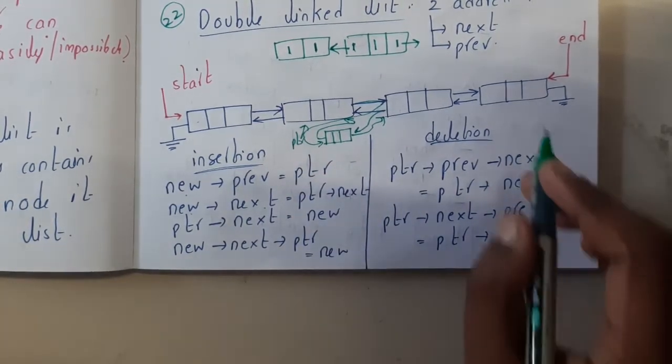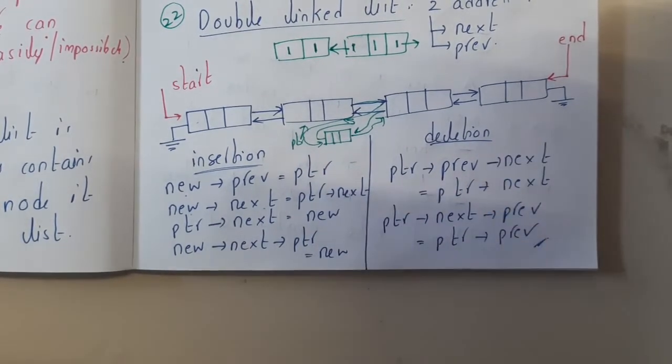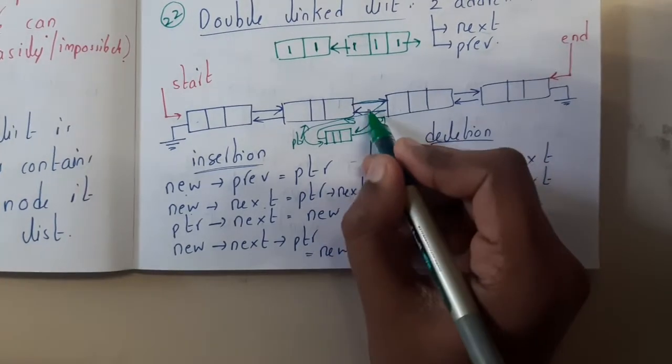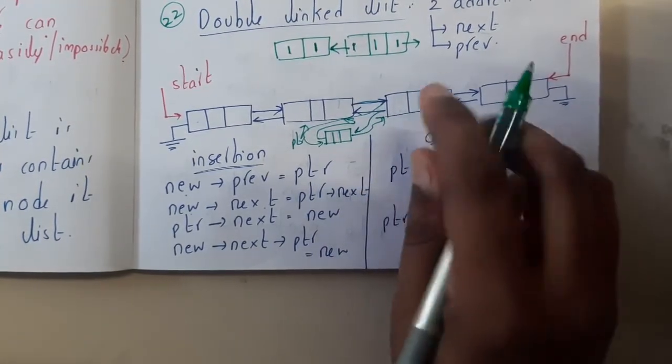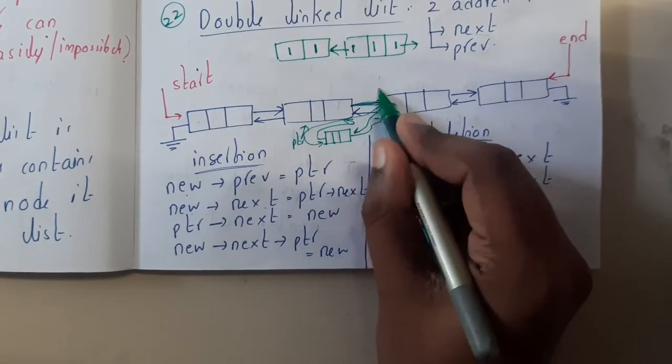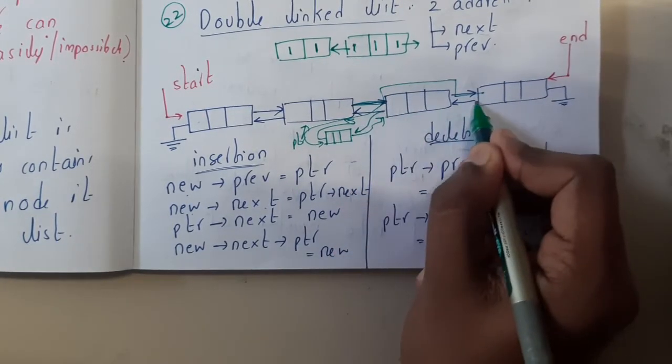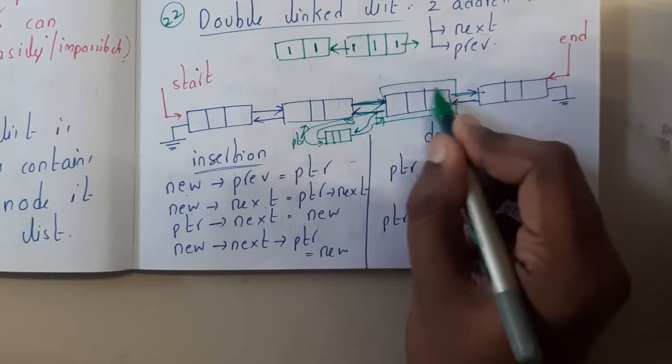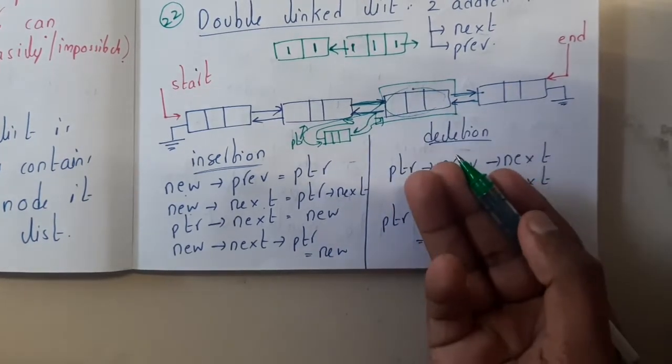Similarly deletion. Deletion is a bit funny. The thing is, you will bypass a node. Basically, if you want to delete this node, just update this address to this and just update this address to this. So even though this element is there, there is no access for it.